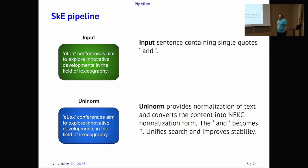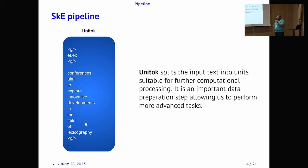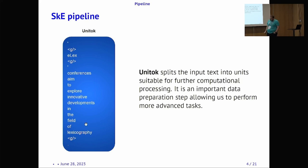It represents a single character and it doesn't matter in which form it is — it's actually better for searching and creating results you can display in Sketch Engine. The next step is tokenization. We have our own in-house tokenizer called UniTok, which splits text into separate tokens and inserts special tokens — for example, a 'G' token meaning 'glue', so we know that in the original text a single quote belongs to the adjacent word.